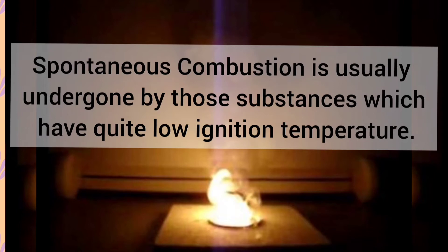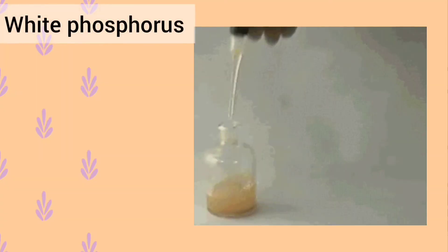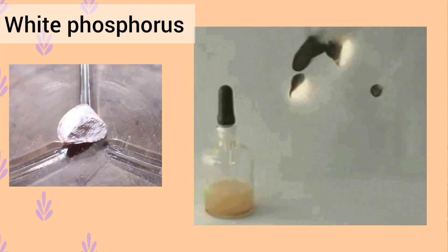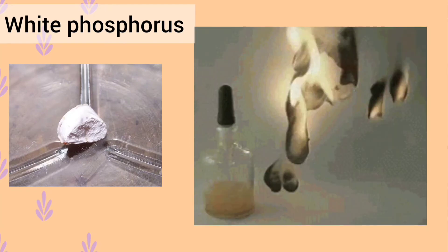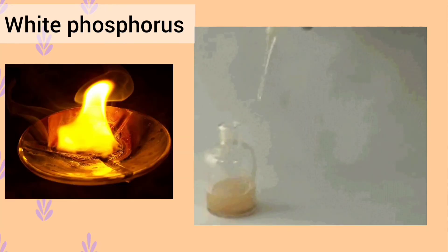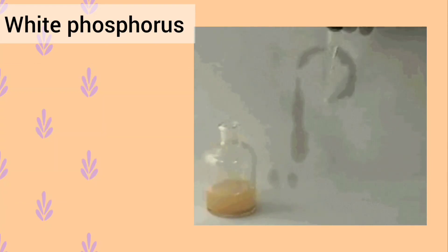For example, white phosphorus is a substance which undergoes spontaneous combustion. In other words, we can say that white phosphorus burns in air at room temperature. So if we keep a piece of white phosphorus in a china dish, we will see that it catches fire by itself and starts burning without being heated. So we can say that the burning of white phosphorus on its own at room temperature is an example of spontaneous combustion.